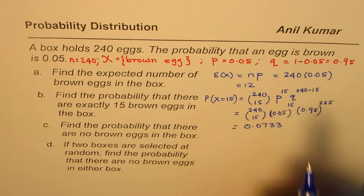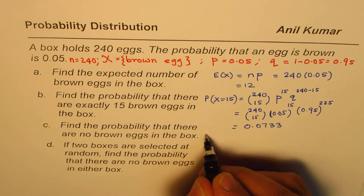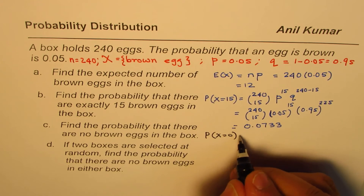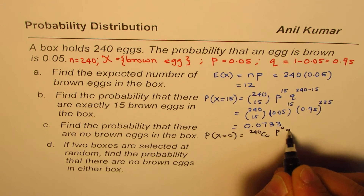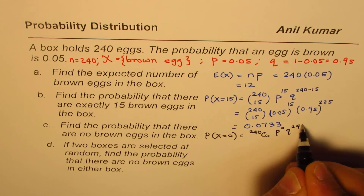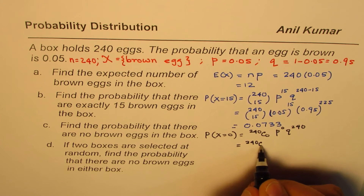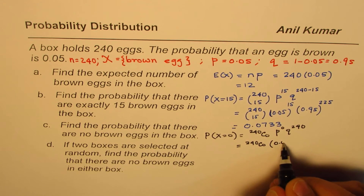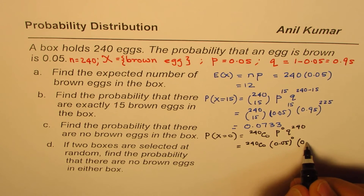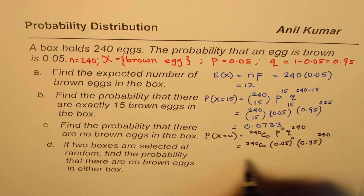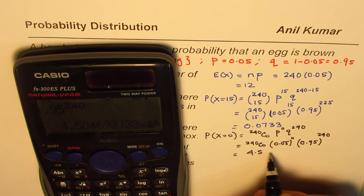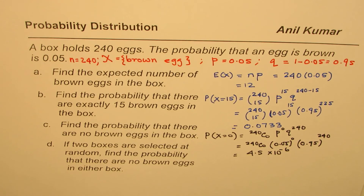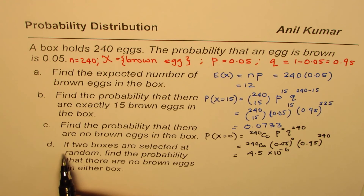Part C: find the probability that there are no brown eggs, meaning all eggs are not brown. P(X = 0) equals 240C0 times P to the power of 0 times Q to the power of 240. Since 240C0 is 1 and 0.05 to the power of 0 is also 1, we are left with 0.95 to the power of 240, which equals 4.5 times 10 to the power of minus 6.